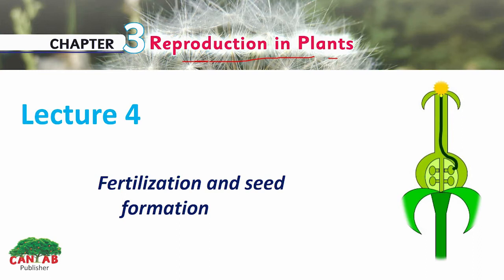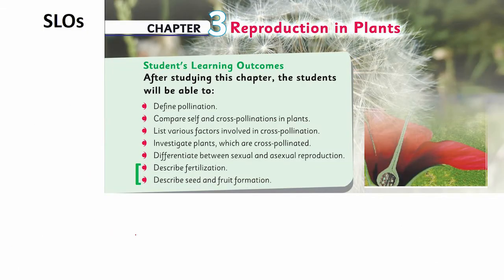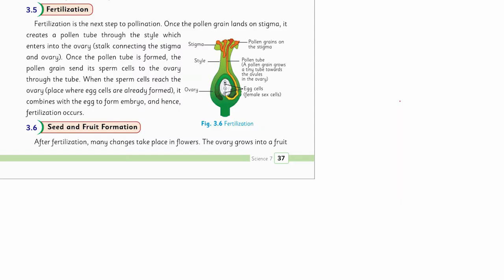The first type of sexual reproduction was pollination, in which pollen grains carrying male gametes transfer from the anther — the male part — to the stigma, the female part of a flower. This lecture covers what happens when pollen grains reach the stigma, and how seed and fruit formation take place. The SLO to be achieved is to describe fertilization, the second step in sexual reproduction, and seed and fruit formation, the third step. We'll find support in the textbook at page 37 under topics 3.5 and 3.6.